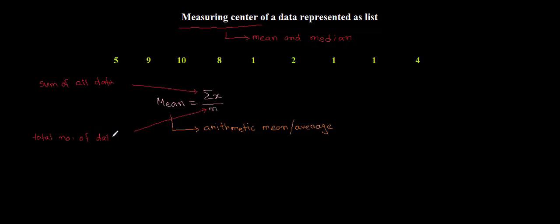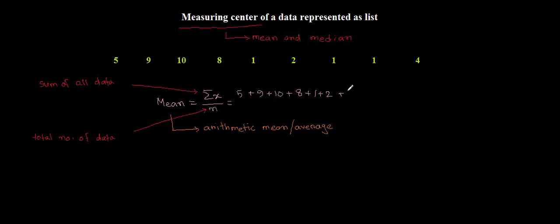So let's calculate the mean for this example. Mean is equal to summation of x divided by n. The sum of data is 5 plus 9 plus 10 plus 8 plus 1 plus 2 plus 1 plus 1 plus 4. We have summed up all the data, and now we need to divide by the total number of data.